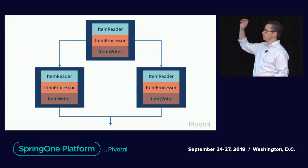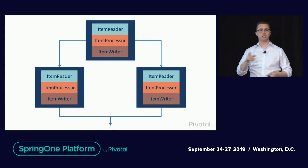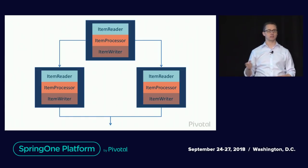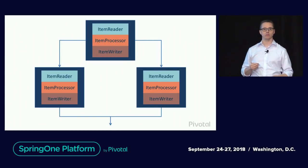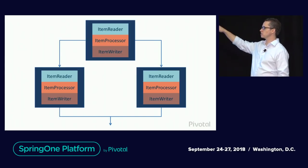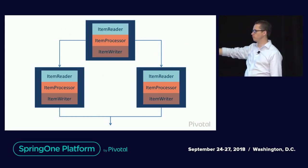Step two and step three will execute in parallel. It should be noted that by default Spring Batch will not execute them in parallel — you have to provide a task executor. By default we use the synchronous task executor because there's no other good default; otherwise you'd just be randomly saying four sounds good for threads. You provide a task executor that will execute these in threads, and then all sides need to execute and finish before the job continues.